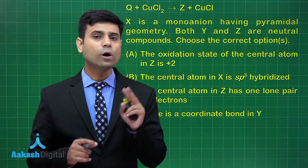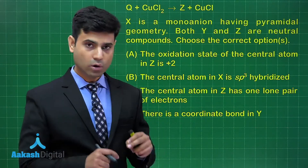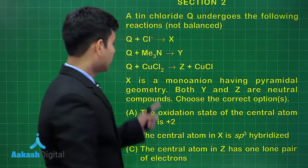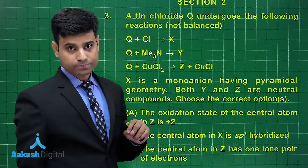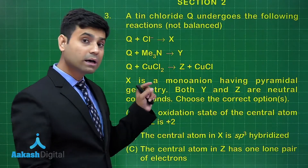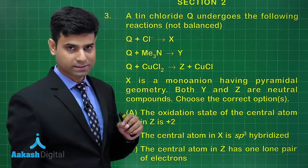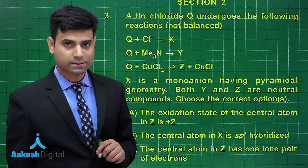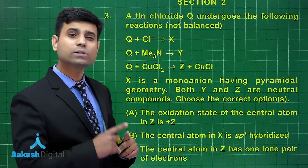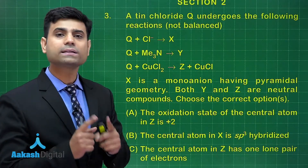We have two options for tin chloride: SnCl₂ or SnCl₄. Looking at the reaction with CuCl₂ giving CuCl, reduction of Cu²⁺ is taking place, so Q should be oxidized. SnCl₄ cannot be further oxidized. Hence Q cannot be SnCl₄. Therefore Q must be SnCl₂.